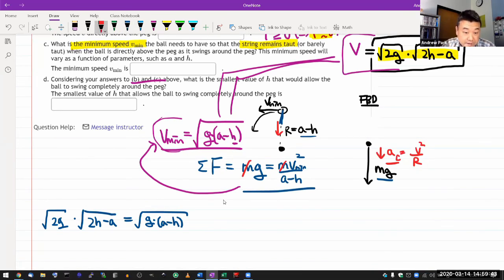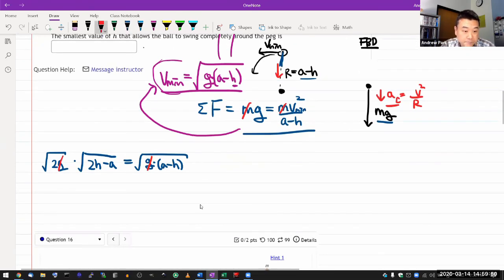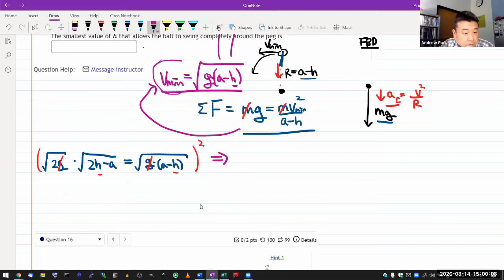Square root of 2g times square root of 2h minus a is equal to square root of g times a minus h. Some things cancel out. G cancels out. So it doesn't matter. This is a geometric thing we are trying to determine. It doesn't matter what planet you are on. I'm going to try to get h by itself. The very first thing to do is square both sides. That will give me 2 times all this, which will give me 4h minus 2a is equal to a minus h. So let me move h over, 5h, move a's over is equal to 3a. So that gives me h is 3 fifths of a.